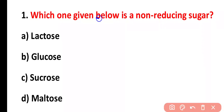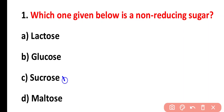Question number one: which one of the following is a non-reducing sugar? Options: lactose, glucose, sucrose, maltose. The correct answer is option C. Sucrose does not react with Fehling's solution; it is a non-reducing sugar.